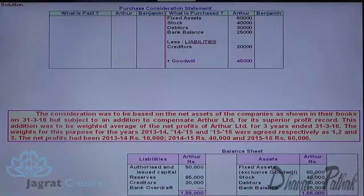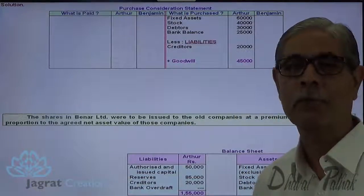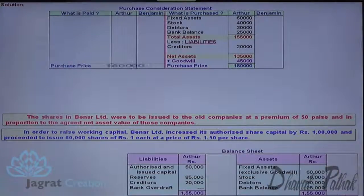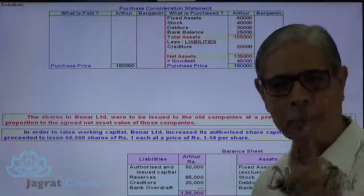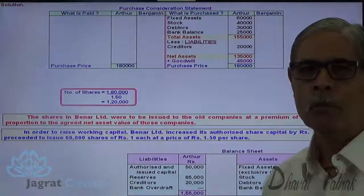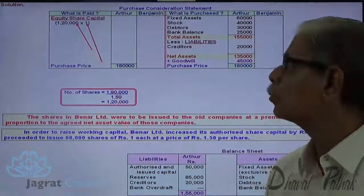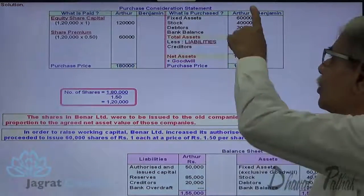Now finding the net assets of Arthur Ltd.: total assets 1,55,000 minus liabilities 20,000 gives 1,35,000, plus goodwill 45,000 gives a purchase price of 1,80,000. This 1,80,000 is to be paid by issue of equity shares of rupees 1 each at a premium of 0.50 per share, so the exchange value per share is Rs. 1.50. Number of shares to be issued: 1,80,000 ÷ 1.50 = 1,20,000 shares. Payment: equity share capital 1,20,000 shares of Rs. 1 each = 1,20,000 plus security premium at 50 paisa = 60,000, totaling 1,80,000 paid to Arthur Ltd.